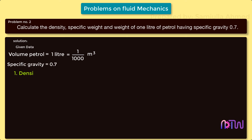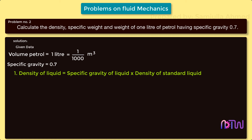First, density of the liquid equals specific gravity multiplied by density of the standard liquid. Density of petrol is 0.7 into 1000 kg/m³, therefore the density of petrol is 700 kilograms per meter cube.